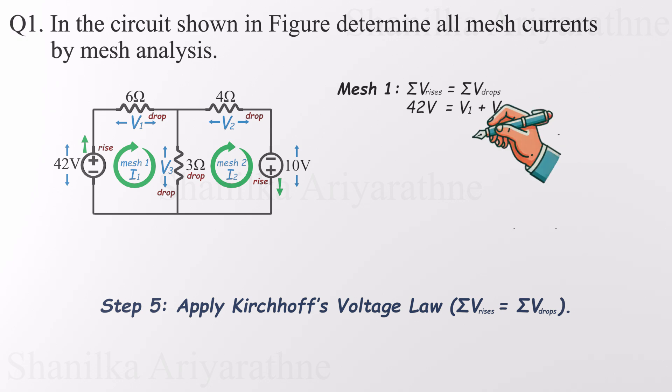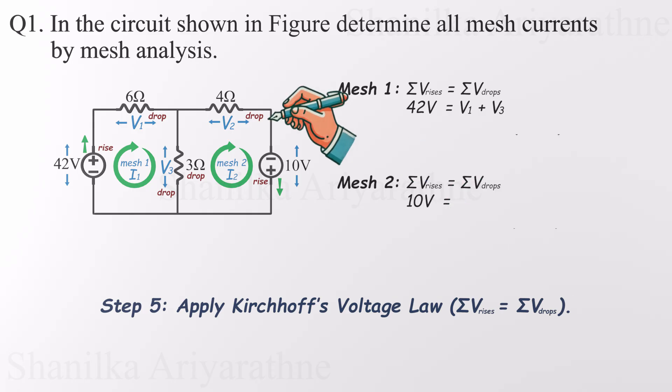Now on to mesh 2. Here we have a 10 volt voltage rise from the second source, and again, two resistor drops, V2 and V3. So our second equation is 10 volts equals V2 plus V3. And there we go, two clean KVL equations, one for each mesh. These are the foundation for solving the rest of the problem, so keep them neat and accurate.